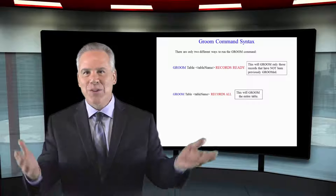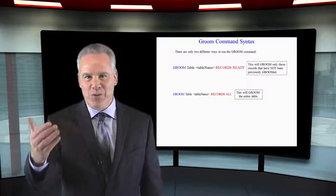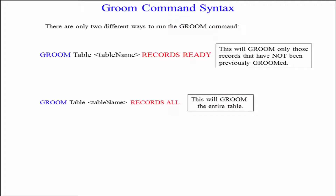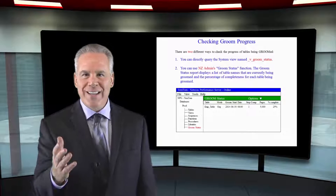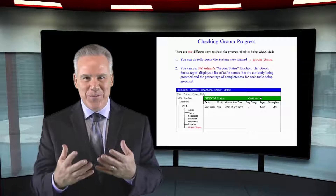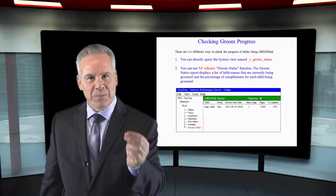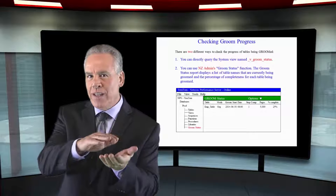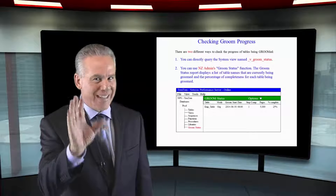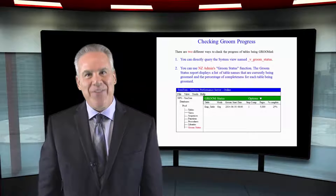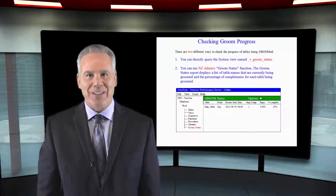GROOM TABLE has only two choices: RECORDS READY and RECORDS ALL. If you do RECORDS READY, it's going to groom all records it hasn't groomed before. If you do RECORDS ALL, it's going to groom all records in the table. Those are your choices for the GROOM command. If you want to see what tables are being or have been groomed, go to NZ_ADMIN or use the system table _V_GROOM_STATUS and you can check out that system table to see this information.